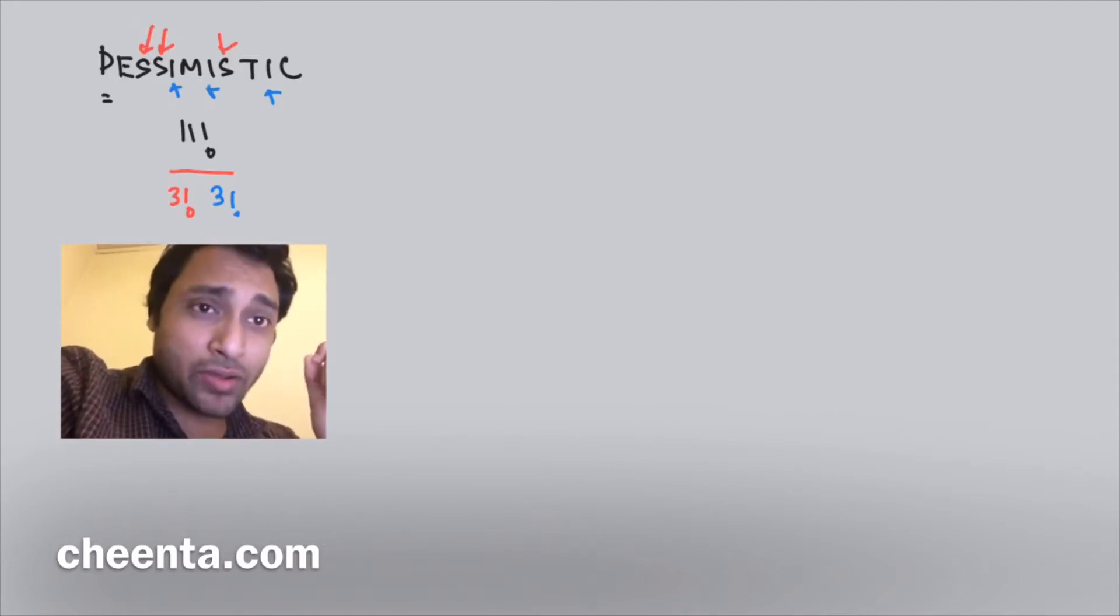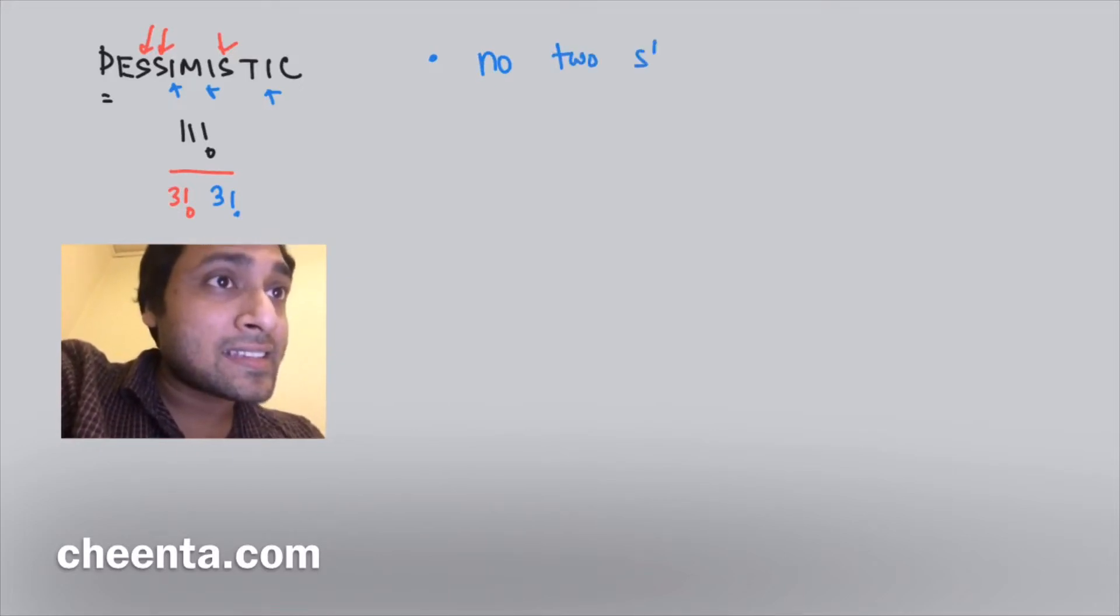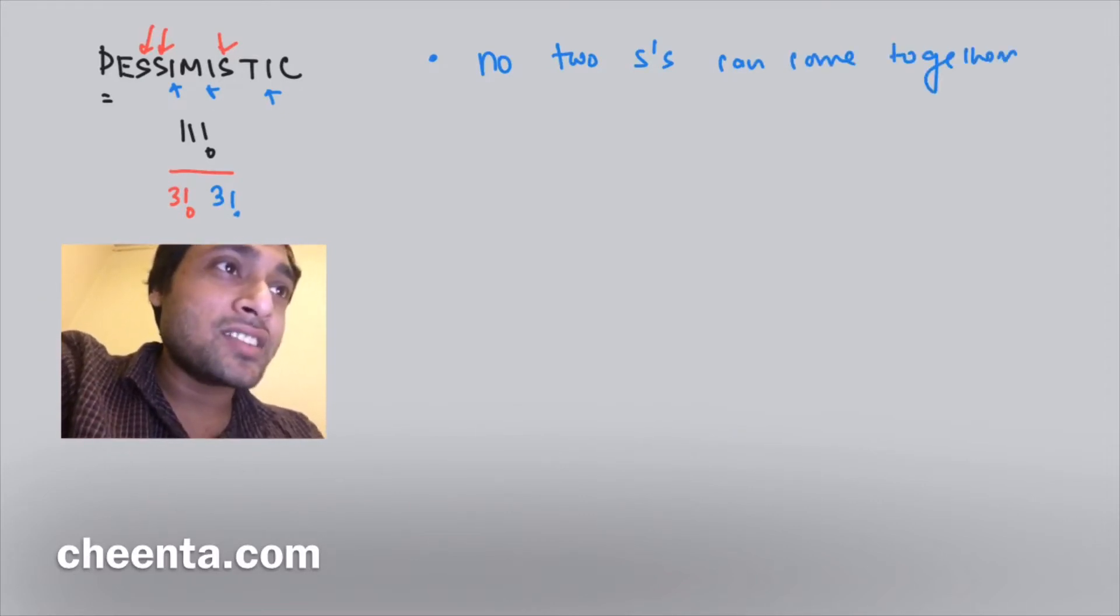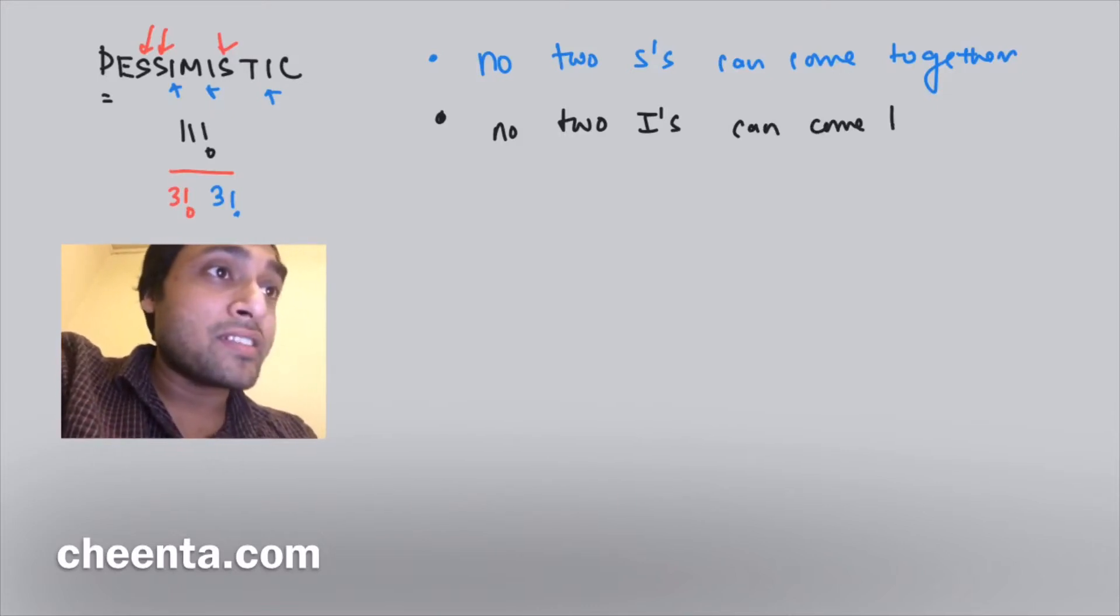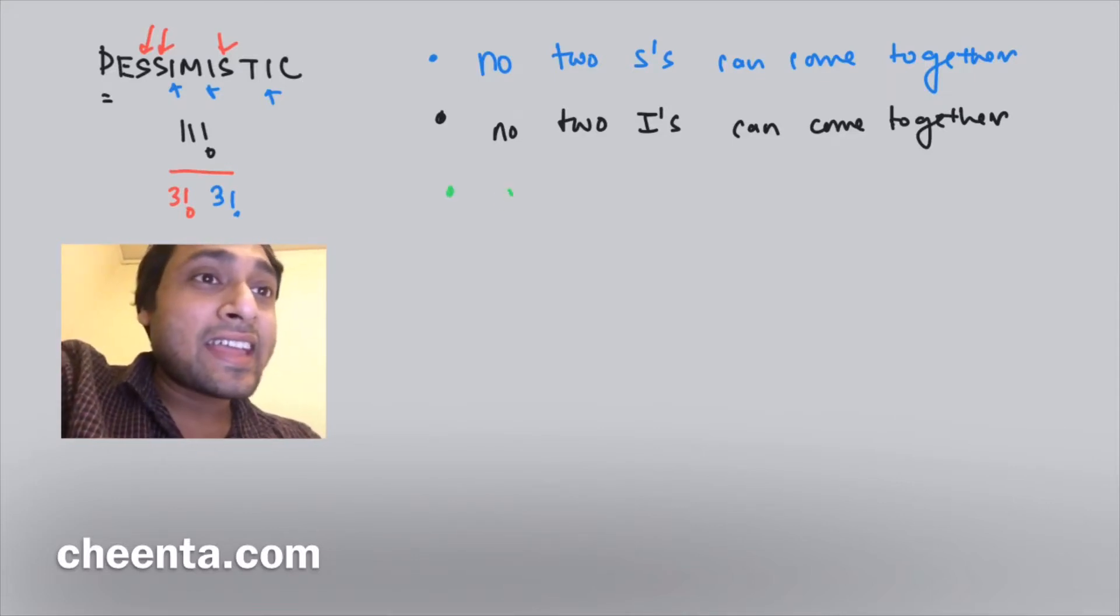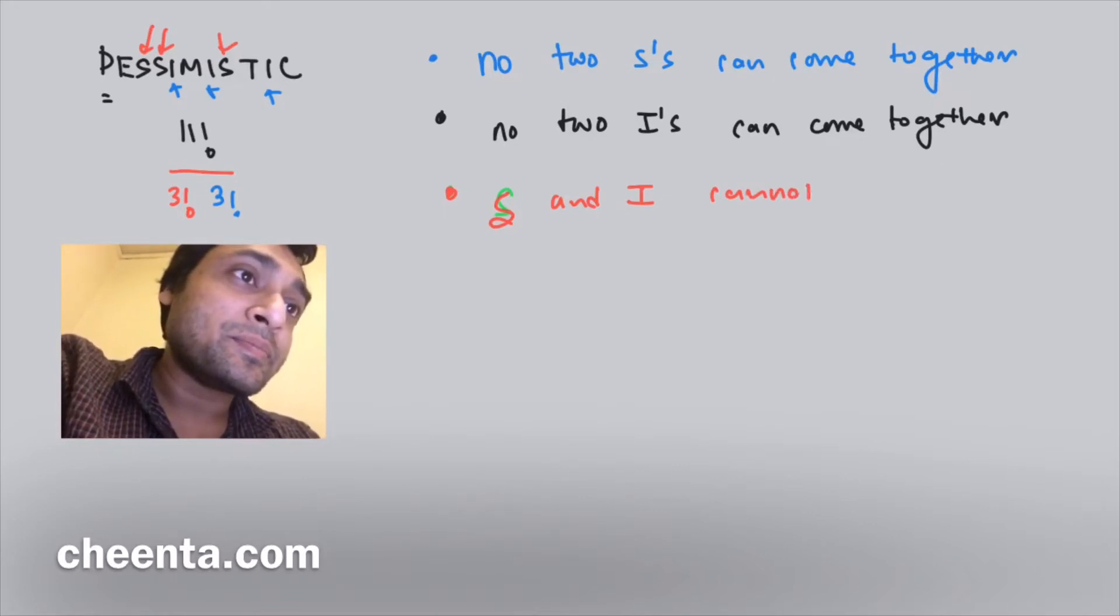Our question however is a little bit different. We do not want - let me write that - no two S's can come together. Similarly, no two I's can come together. And the third condition is S and I cannot come together. So these are the three conditions that we have.